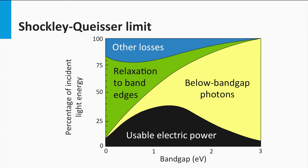The Shockley-Queisser limit, as discussed in week 3, is a kind of thermodynamic approach to estimate the maximum performance of a single junction solar cell. The AM1.5 spectrum is incident on a solar cell. We don't allow the solar cell to increase in temperature. This means that all energy in the incoming AM1.5 spectrum can escape the system of the solar cell by either the current density generated or by the radiative recombination of charge carriers.